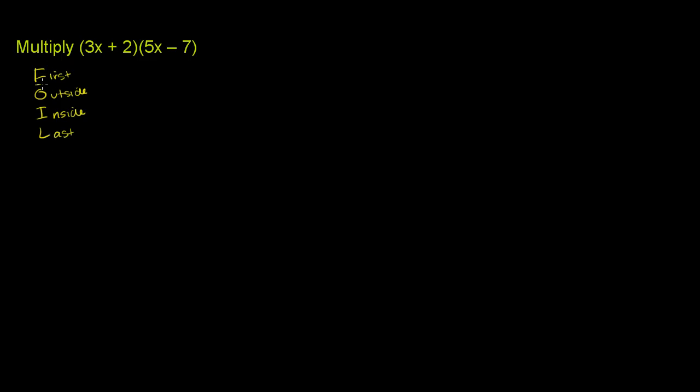So first says just multiply the first terms in each of these binomials. So just multiply the 3x times the 5x. The outside part tells us to multiply the outside terms. So in this case,